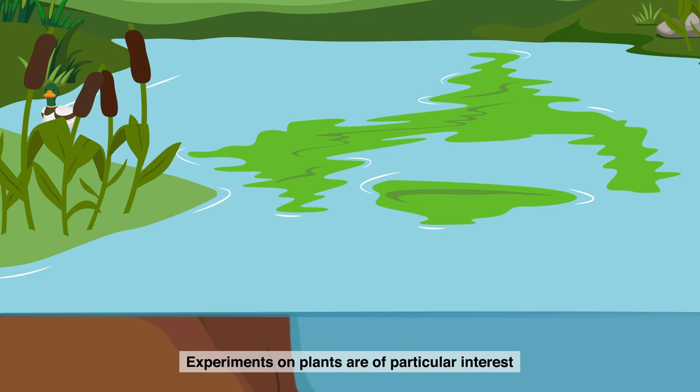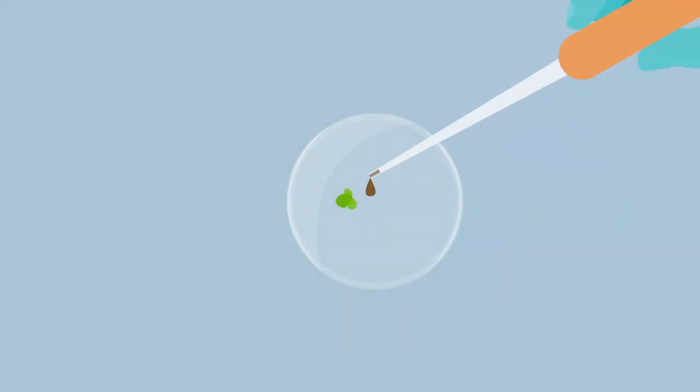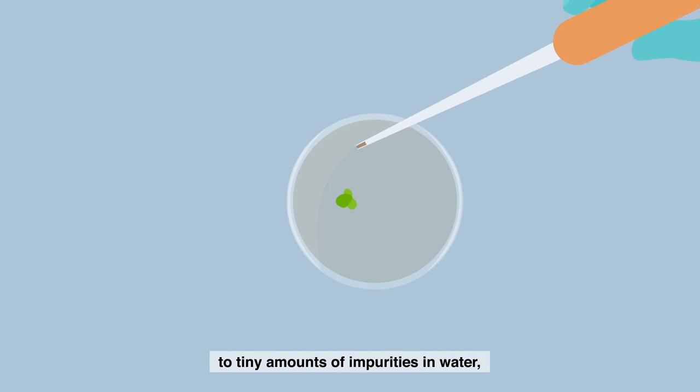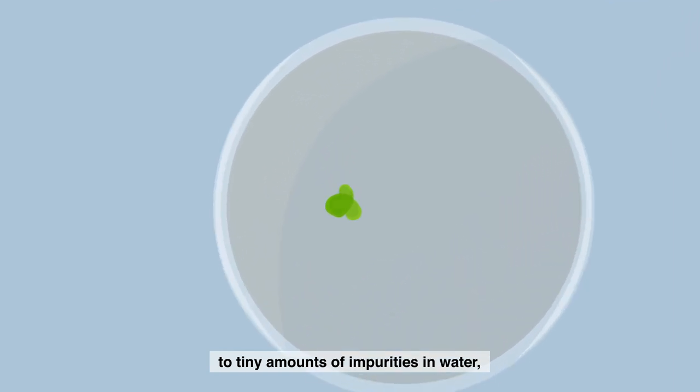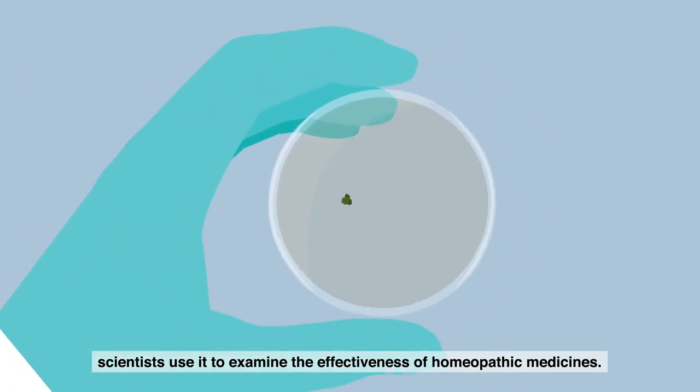Experiments on plants are of particular interest because a placebo effect can be ruled out. Because duckweed is especially sensitive to tiny amounts of impurities in water, scientists use it to examine the effectiveness of homeopathic medicines.